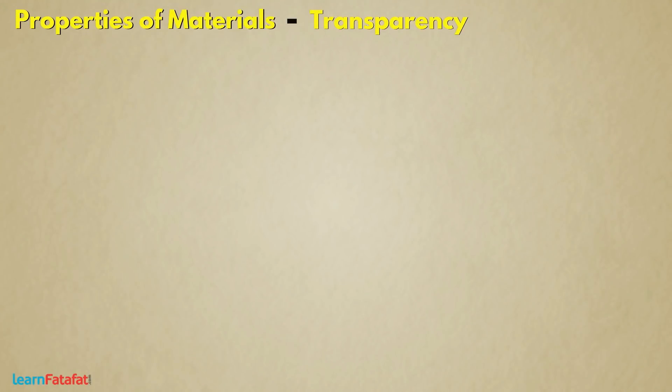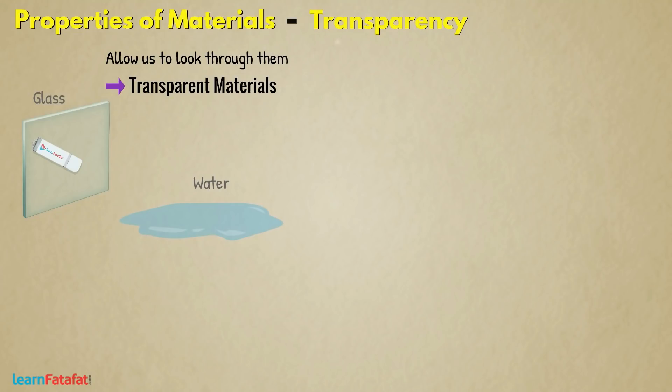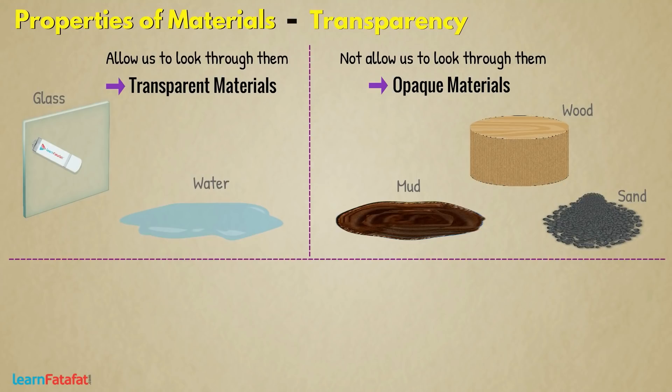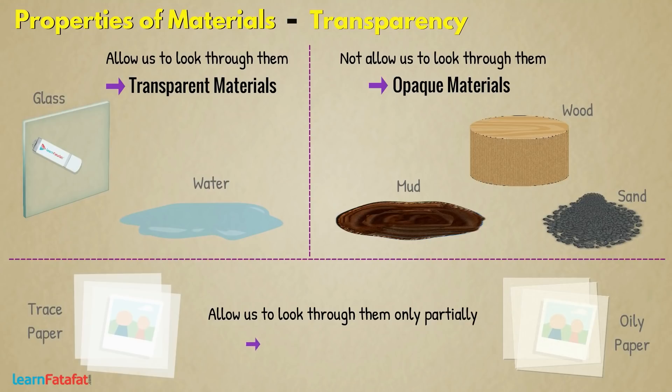Transparency. Some materials such as glass, water, etc. allow us to look through them completely. Such materials are called transparent materials. Some materials such as wood, mud, sand do not allow us to look through them. These are called opaque materials. There are some materials, for example, trace paper, oily paper, etc. which allow us to look through them only partially. Such materials are called translucent materials.